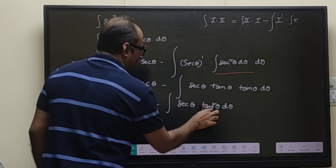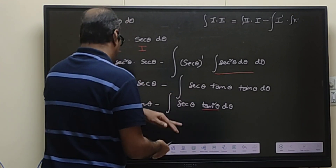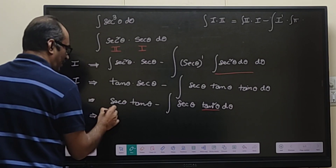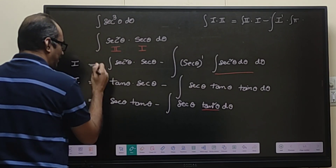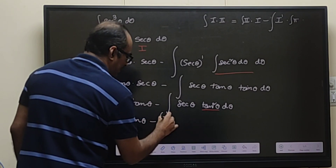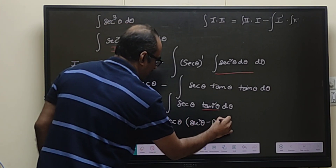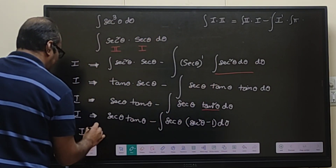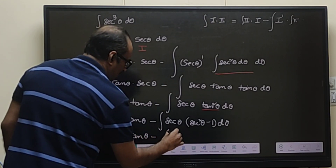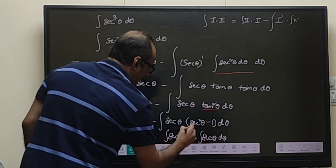What we will do now is write tan square theta as secant square theta minus 1, so that we will get another i with a negative sign and can bring it to the left-hand side. So i equals secant theta tan theta minus the integral of secant theta multiplied with secant square theta minus 1, d theta. This becomes i equals secant theta tan theta minus integral of secant cube theta plus integral of secant theta, d theta.